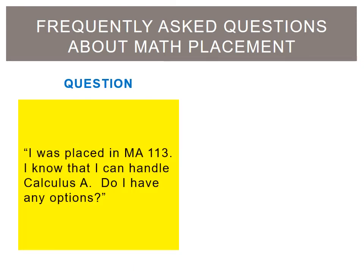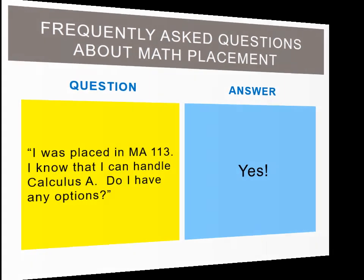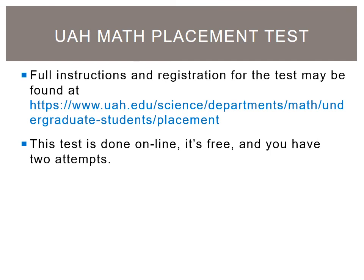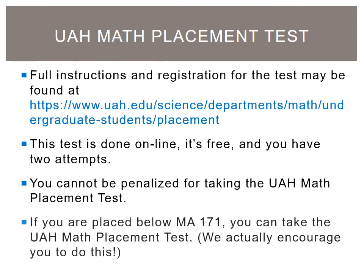I was placed in MA 113. I know I can handle Calculus A, MA 171. Do I have any options? Yes. If you are not satisfied with your math placement, students may take the UAH math placement exam. The exam is online and there is no cost to take it. However, students are limited to two attempts. You cannot be penalized for taking the math placement test. Thus, we encourage all students who are not placed into MA 171 Calculus A to take the math placement test.